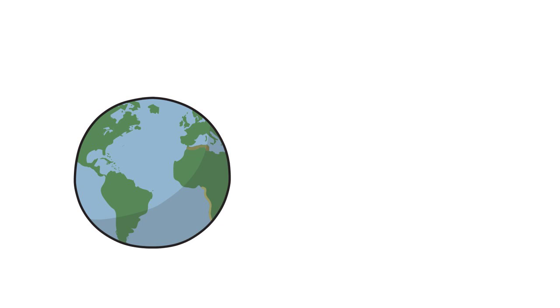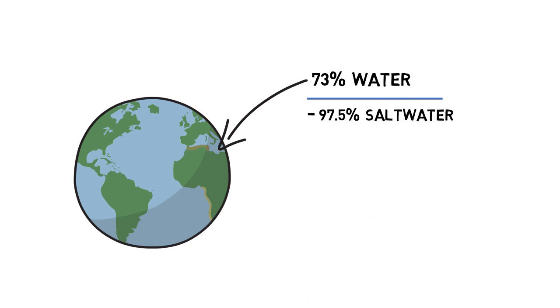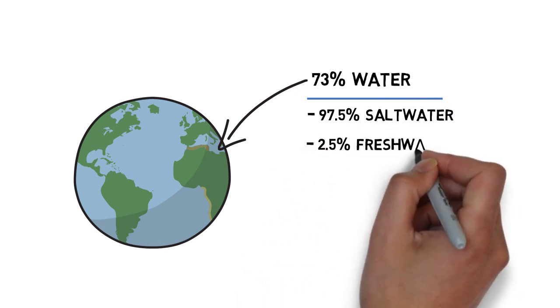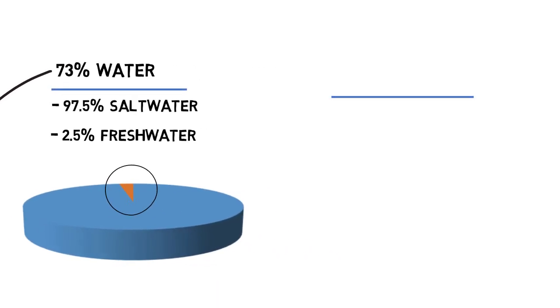Water covers about 73% of our Earth. However, 97.5% of the Earth's water is salt water, whereas fresh water is only 2.5%.